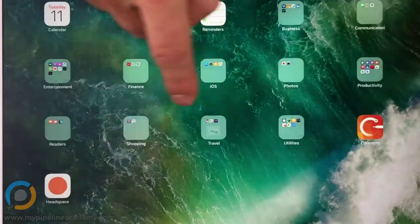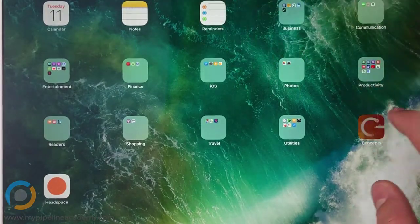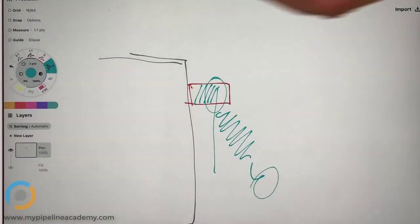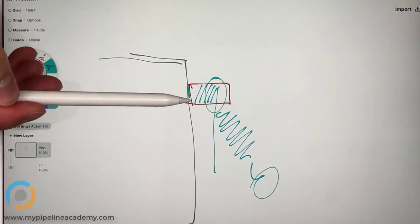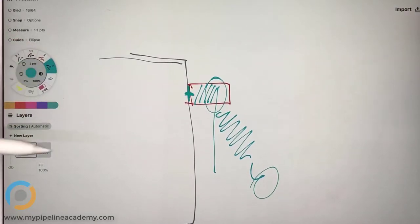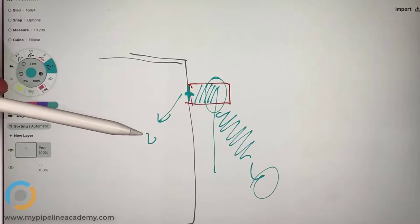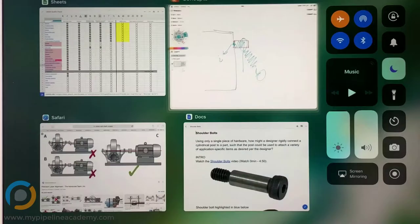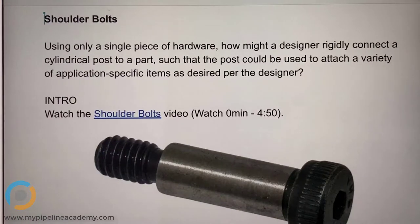So if you go back to the drawing, really the question is what can we put right there so it attaches? And the answer is the shoulder bolts.